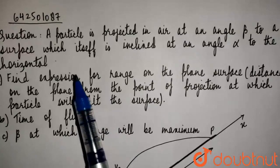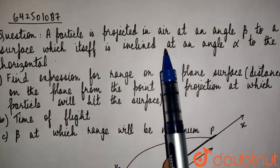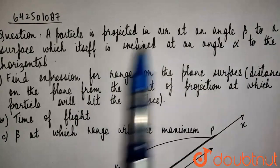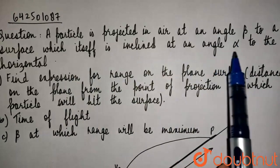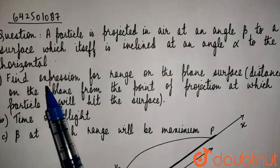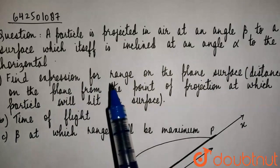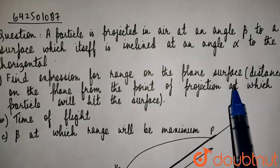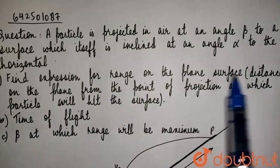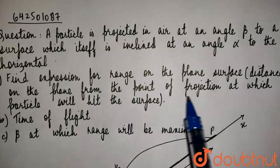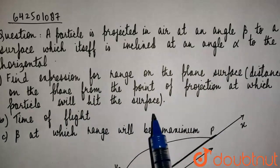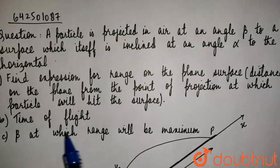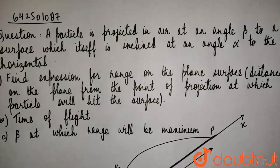The question is: a particle is projected in air at an angle beta to a surface which itself is inclined at an angle alpha to the horizontal. Find the expression for range on the plane surface, i.e. the distance on the plane from the point of projection at which the particle will hit the surface, the time of flight, and the value of beta at which range will be maximum.